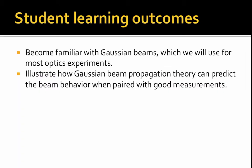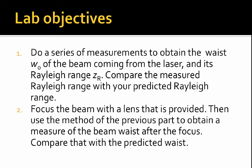The learning outcomes of the lab are to become familiar with Gaussian beams, because we'll use Gaussian beams for all or at least most of our optics experiments, and to illustrate how Gaussian beam propagation theory can predict the beam behavior, but only when it's paired with good measurements. The lab objectives are to do a series of measurements to obtain the waist W-naught of the beam coming from the laser and its Rayleigh range, then to compare the measured Rayleigh range with your predicted Rayleigh range. Second, you'll focus the beam and use the previous type of measurement to get a measurement of the beam waist after the focus. We'll be emphasizing the beam waist measurements and the propagation of the Rayleigh range.